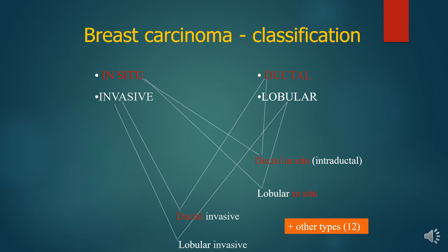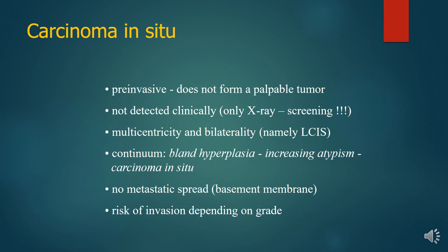Breast carcinoma can be classified as in situ or invasive, and as lobular or ductal — including ductal in situ, ductal invasive, and lobular invasive. Carcinoma in situ is a pre-invasive tumor with multi-centricity and bilaterality, so surveillance is needed. There is no metastatic spread, but the risk of invasion depends on the grade of the tumor.